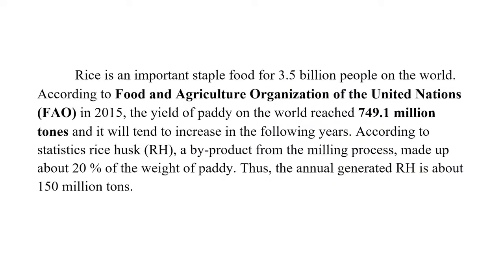Rice is an important staple food for three and a half billion people in the world. According to the Food and Agriculture Organization of the United Nations, in 2015 the yield of paddy in the world reached 749.1 million tons and it will tend to increase in the following years. According to statistics, rice husk, a by-product from the milling process, makes up about 20% of the weight of paddy. Thus, the annual generated rice husk is about 150 million tons.